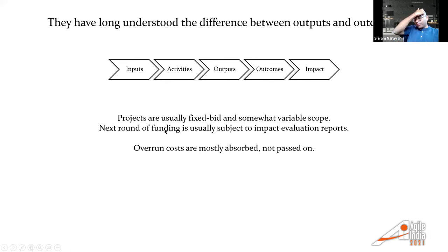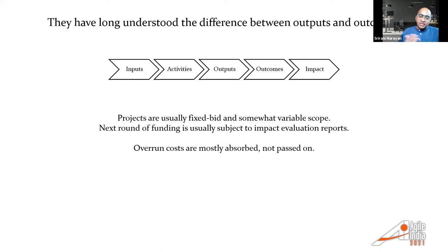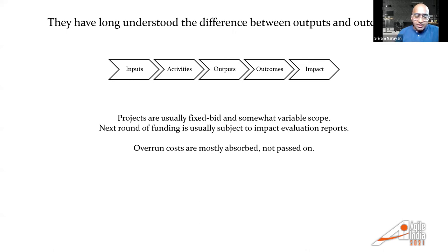Projects in this space are usually fixed bid but somewhat variable scope — the funder says I'm going to spend so much money for this kind of program, but there is some scope variability subject to the funder's discretion. They might say, I agree you've met this milestone, so I'm releasing the next tranche of funds. Therefore overrun matters — if effort or schedule overrun happens, the implementer has to absorb that cost. The funder most of the time is not going to cover a 20% effort overrun or 30% extra time.